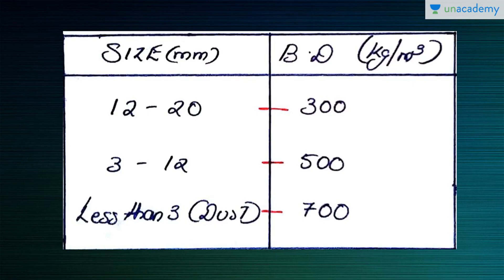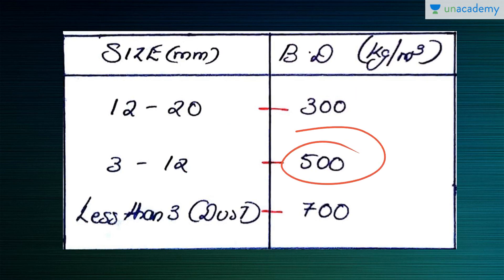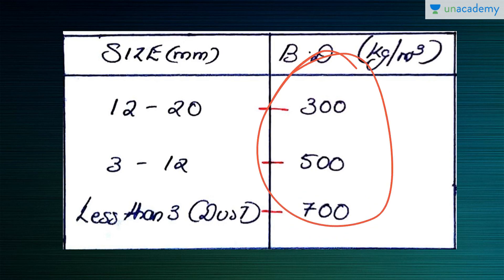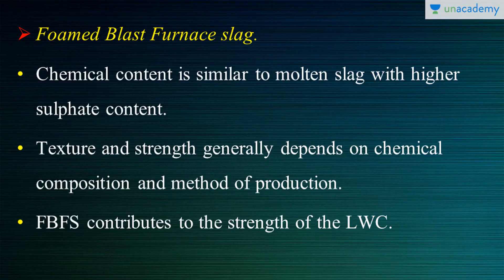Regarding the size and bulk density relationship: for a size of 12 to 20 mm the bulk density is 300 kg/m³; for 3 to 12 mm it is 500 kg/m³; and for less than 3 mm, which is the dust form, it is 700 kg/m³. This variation is partly due to differences in surface area.